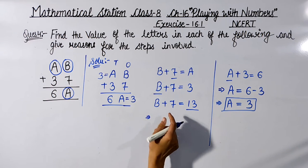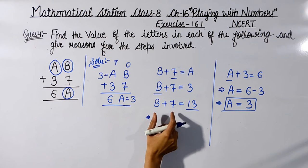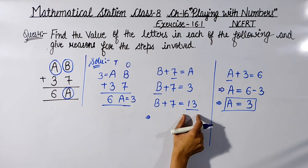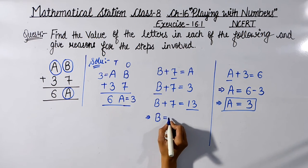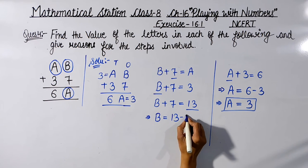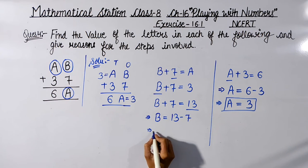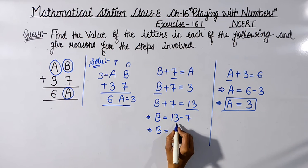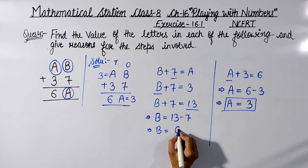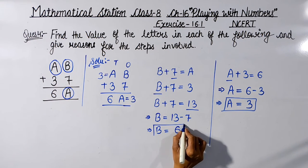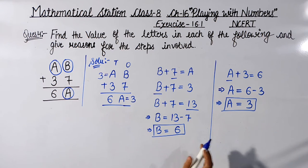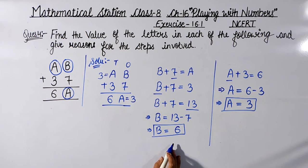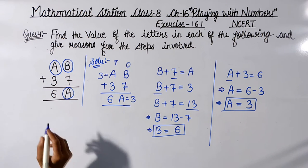Now finding B: B + 7 = 13. Transferring the constant, B = 13 − 7 = 6. So B is equal to 6. Now we will check whether the values A = 3 and B = 6 are correct by substituting them back into the puzzle.